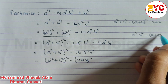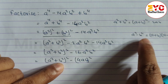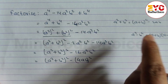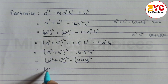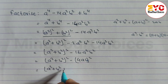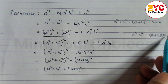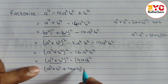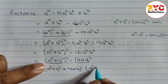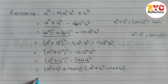Now we apply the a square minus b square formula, which is a plus b times a minus b. In place of a we have a square plus b square, and in place of b we have 4ab. So we get: a square plus b square plus 4ab times a square plus b square minus 4ab.